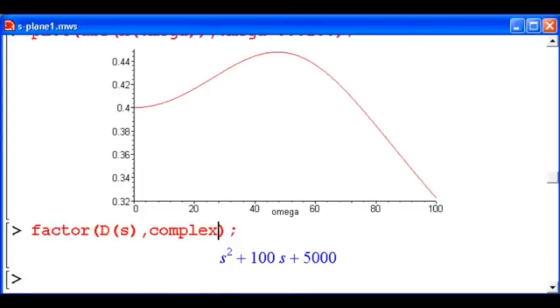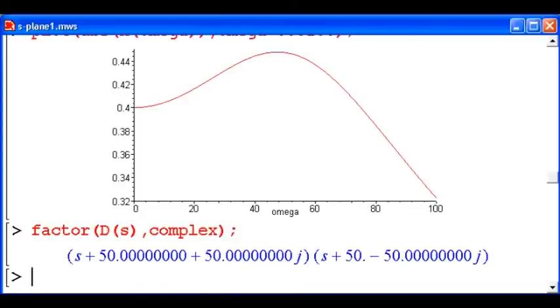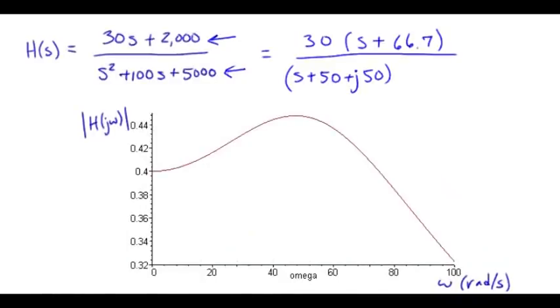And that says factor it over the complex plane. So now we've got S plus 50 plus J50 for our first term. So I've entered that here. And the second term is just the complex conjugate of the first. So that's S plus 50 minus J50.